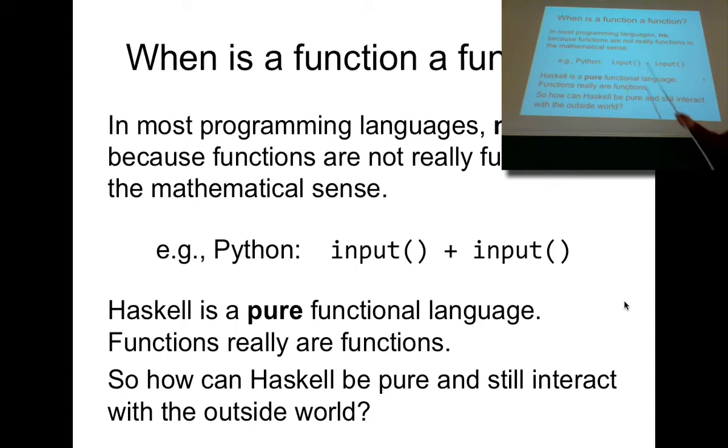A simple example might be you could type something like this in Python. This is not equivalent to two times input, right? And why is that? Well because each call of input produces a different value potentially. And why is that? Well because it obtains a value by interacting with the outside world.